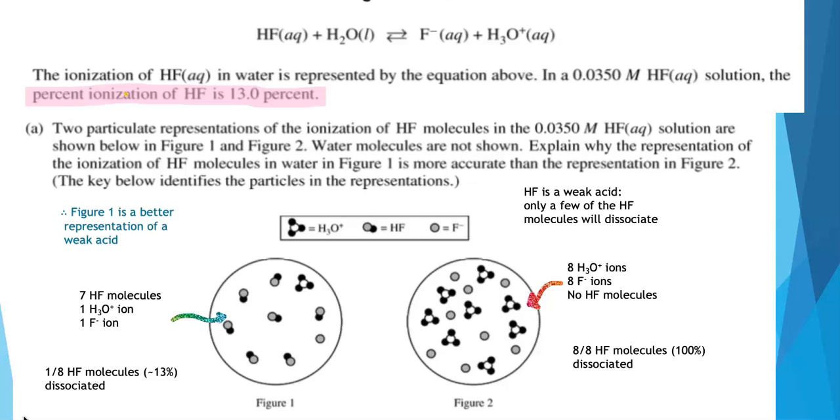Therefore, we can say figure 1 is a better representation of the weak acid because it's mostly HF molecules. It's showing 13% dissociation. Whereas figure 2 is showing 100% dissociation. All of the HF molecules have dissociated.